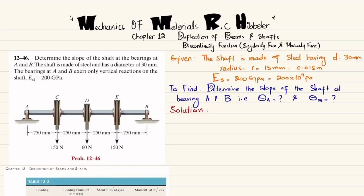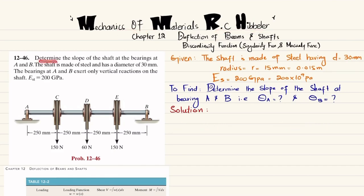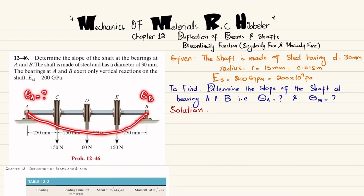Welcome back. In this video we are going to solve problem 12-46, taken from chapter 12 - Deflection of Beams and Shafts - from Mechanics of Materials by R.C. Hibbeler. The problem asks us to determine the slope of the shaft at bearings A and B. The shaft is made of steel with a diameter of 30 millimeters, and the bearings at A and B exert only vertical reactions. Due to the loading at pulleys C, D, and E, the shaft will bend, and we need to find the slopes at A and B - defined by the tangent to the elastic curve.